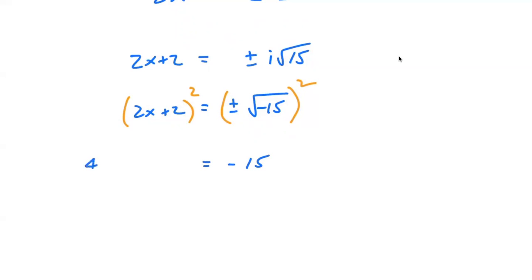The left-hand side, you would have to do FOIL. If you do the FOIL, you would get 4x squared plus 8x plus 4. Then to get the right-hand side equal to 0, you would add 15 on both sides. So you get plus 19 as your constant on the left.